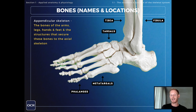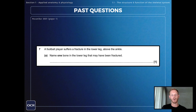So that's everything you need to know on the names and locations of the major bones — the first learning objective covered. Before we finish, I'll show you a couple of exam questions to put this information in context.